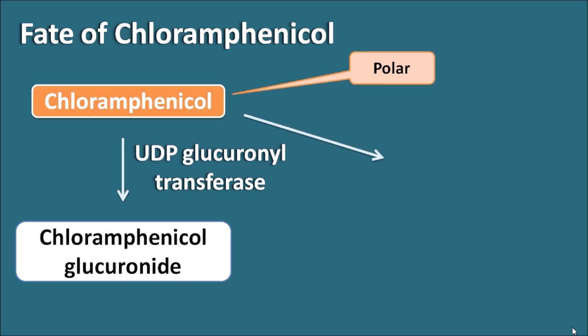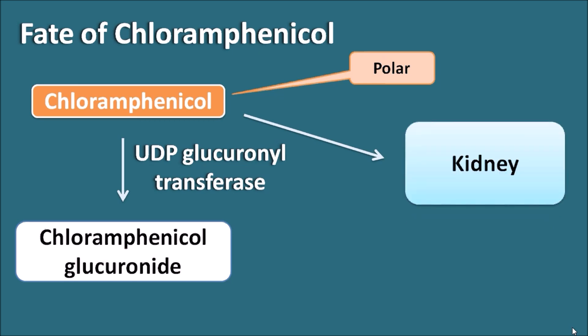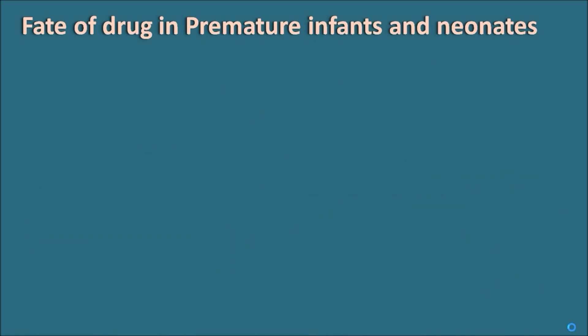In this way, chloramphenicol can be converted into its metabolite, chloramphenicol glucuronide. Chloramphenicol can be directly delivered to the kidney, or it can be converted into the metabolite first and then reach the kidney. The kidneys are responsible for excretion of this drug both as unchanged drug and as its metabolite.